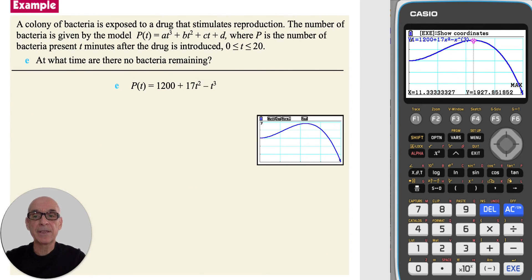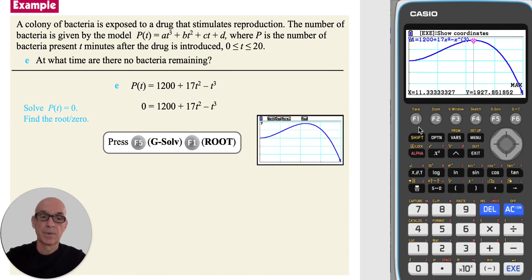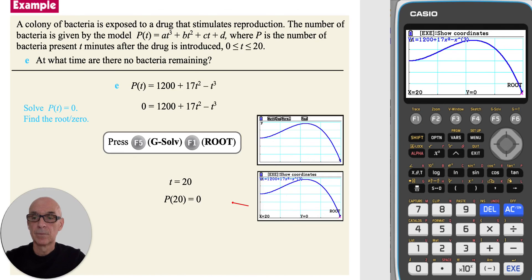In part e, to find at what time there are no bacteria remaining, we need to solve the equation p of t equals 0. So we need to find the root or zero of the equation. Pressing f5, gsolve, and f1 for the root, giving t equals 20. So there are no bacteria remaining after 20 minutes.